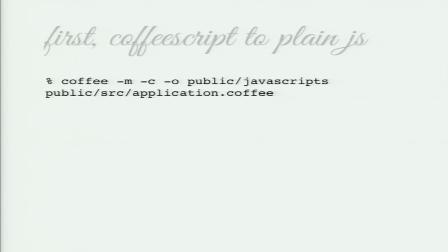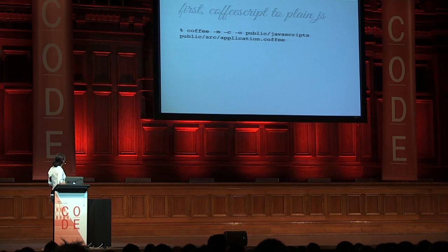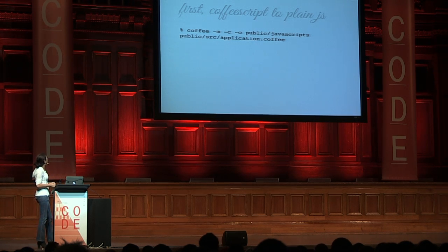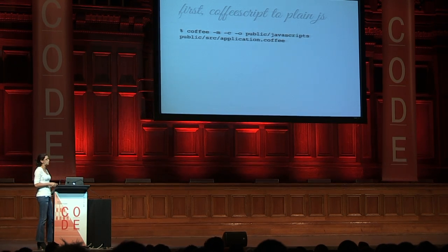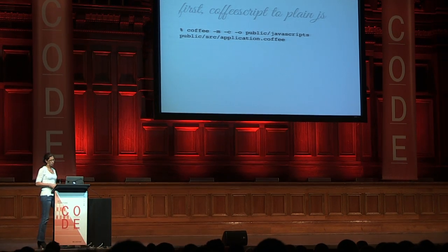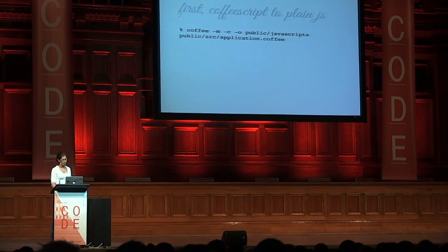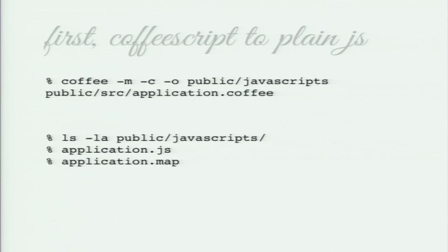When you work with CoffeeScript, the first thing you need to do is generate your plain JavaScript file. I took my application.coffee and passed -M to generate the source map, -c to compile, -o to tell it where I want the output files, and then the file that I want to compile. That generated two files for me: the first one is my plain JavaScript application.js, and the second one is my source map.